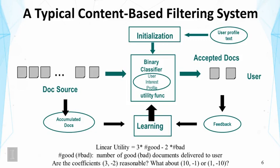How do we evaluate a filtering system? We cannot use ranking evaluation measures like MAP, because we cannot afford to wait for many documents before making a decision. The system must decide in real time whether an item is above the threshold — that is, decide absolute relevance. A commonly used strategy is a utility function, for example: 3 multiplied by the number of good items delivered, minus 2 multiplied by the number of bad items delivered.